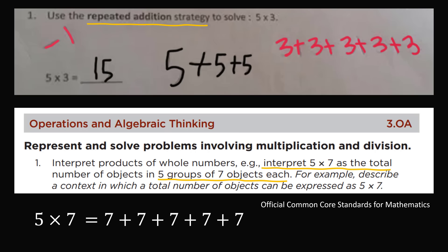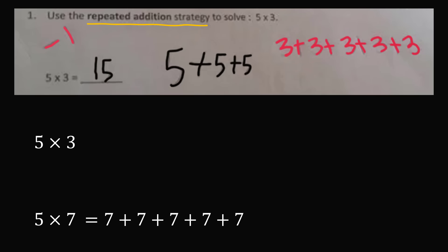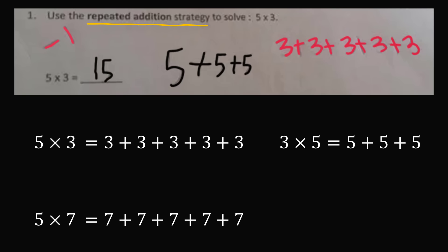So let's apply it to the problem at hand. We have 5 times 3, which should be read as 5 groups of 3, and that would mean this is equal to 3 plus 3 plus 3 plus 3 plus 3. If the problem instead had read 3 times 5, that would be 3 groups of 5, which is equal to 5 plus 5 plus 5. Now both of these products will equal 15, because 5 times 3 equals 3 times 5 — multiplication is commutative. However, only 5 times 3 as 5 groups of 3 would be considered the correct answer by the repeated addition strategy. That is the only way to show you understood it.